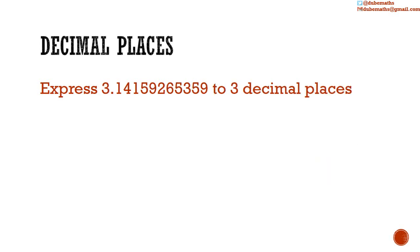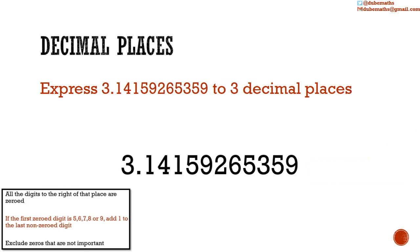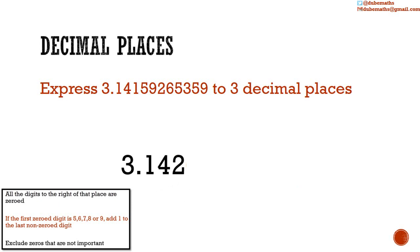10.1473 expressed to 2 decimal places is equal to 10.15. We have 3.14159265359, which is an approximation of pi. We're going to further express this to three decimal places by zeroing all the places to the right of the third decimal place. The first zeroed digit is a 5, so we add 1 to 1 to get 2, leaving us with 3.142.